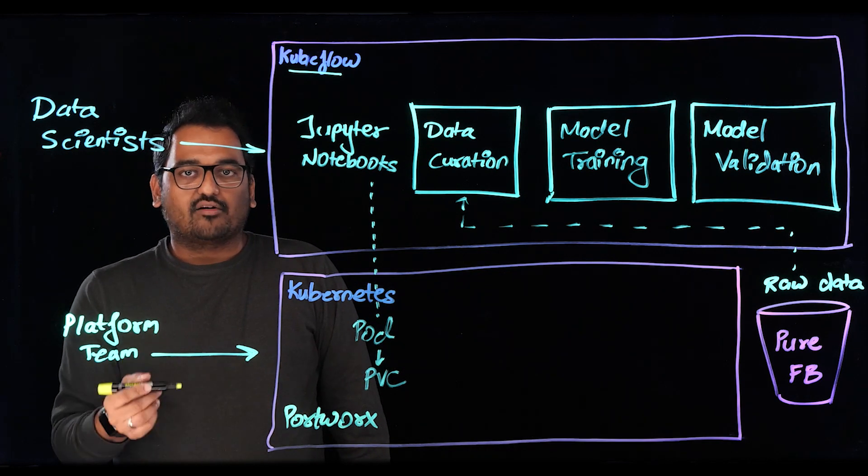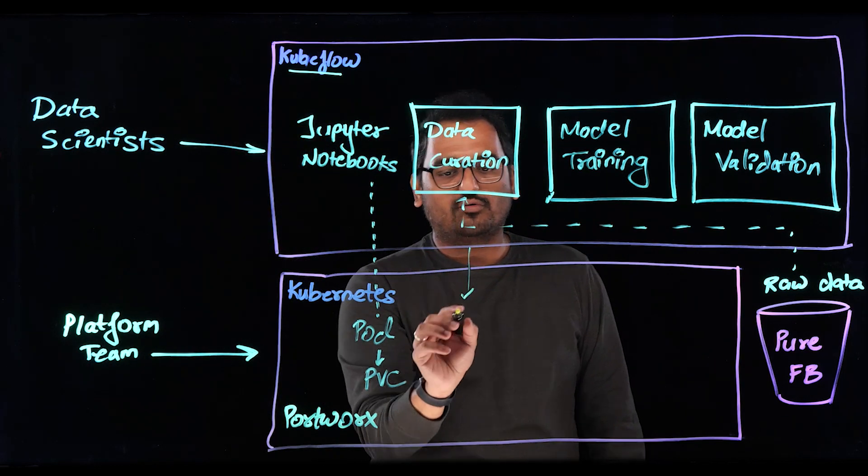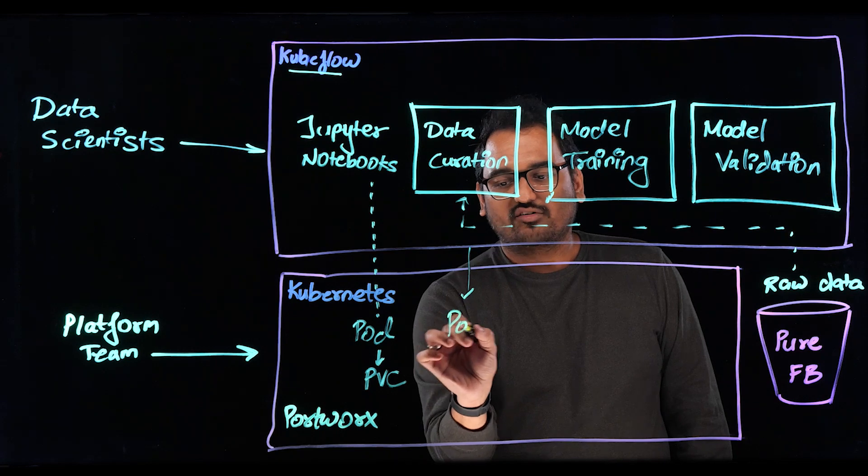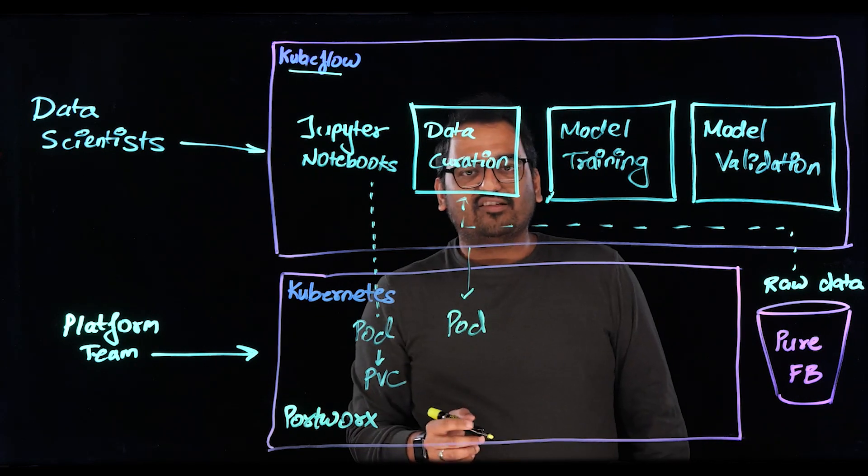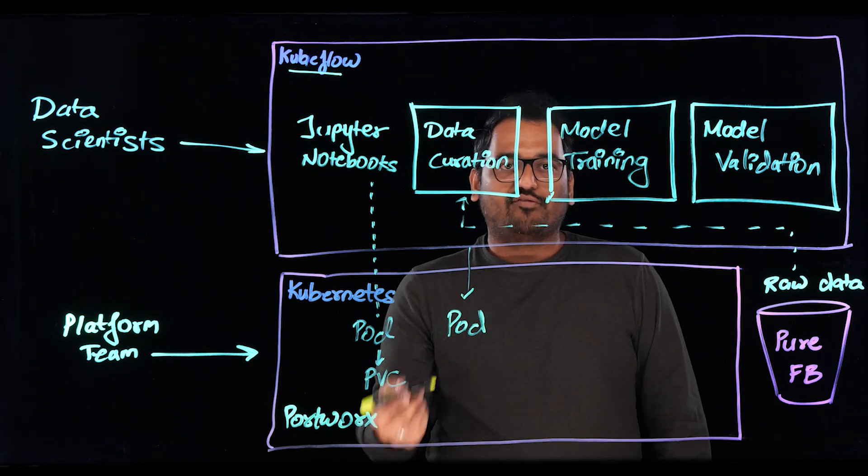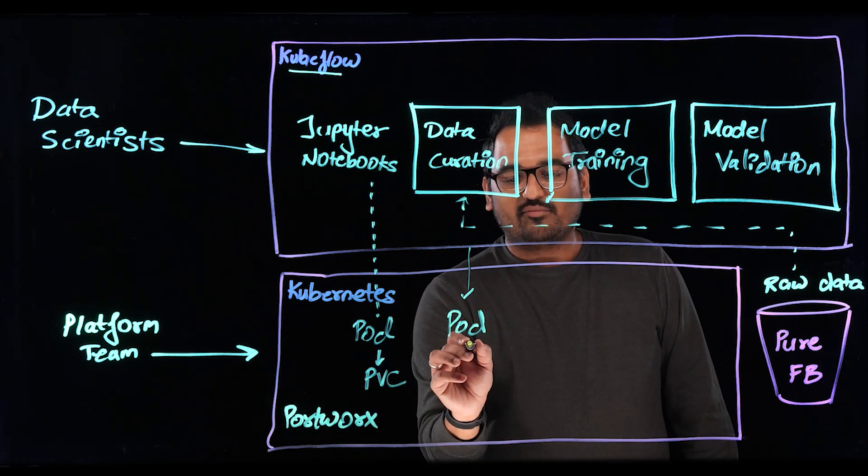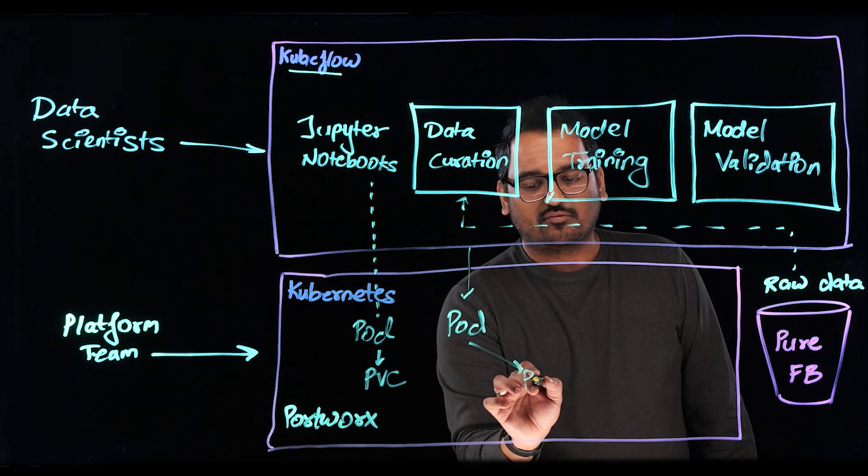So let's see what this pipeline workflow actually looks like. As soon as I trigger a pipeline run, each phase in this pipeline will correspond to a Kubernetes pod. So I'll have a pod for the data curation phase, which is bringing in or importing the raw data from my Pure FlashBlade bucket or any S3 bucket that I'm storing my raw data in. And then I'm storing it in a read-write many persistent volume.